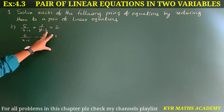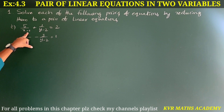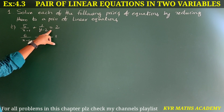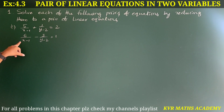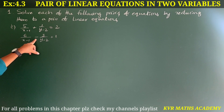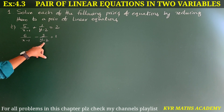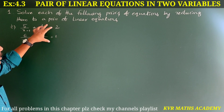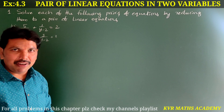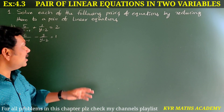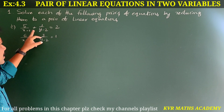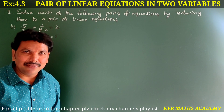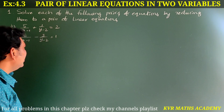The first question is: 5/(x−1) + 1/(y−2) = 2, and 6/(x−1) − 3/(y−2) = 1. These are the two equations given. We need to find the values of x and y.